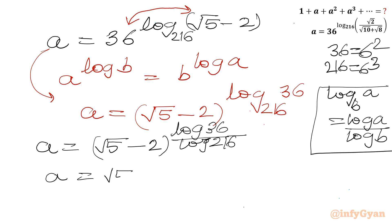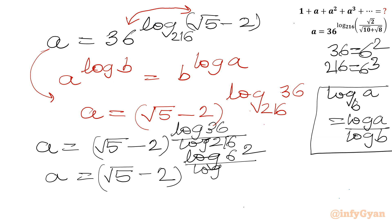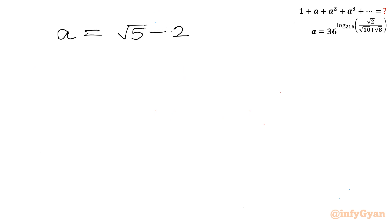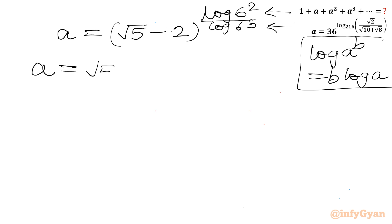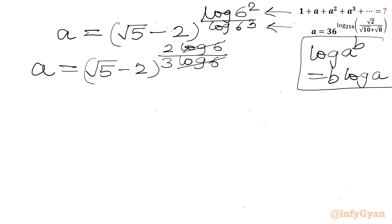Now we can write 36 as 6² and 216 as 6³. So a = (√5 − 2)^(log 6² / log 6³). Applying the power rule log(a^b) = b·log a, the numerator becomes 2·log 6 and the denominator becomes 3·log 6. The log 6 terms cancel, giving a = (√5 − 2)^(2/3).